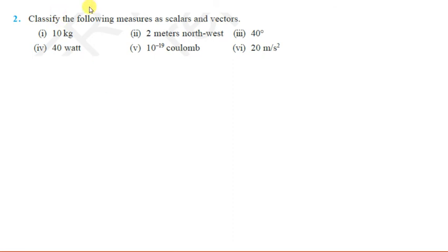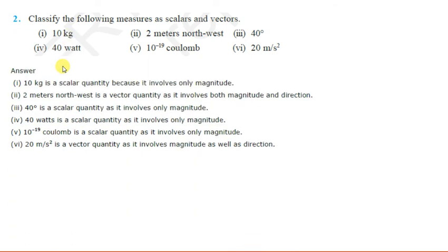Next, classify the following as scalars and vectors. In case 2, magnitude ke saath saath direction bhi diya hai, so it is a vector quantity. In case 3, kewal magnitude hai — angle — so it is also a scalar. In case 4, it is a scalar quantity because only magnitude is involved; yeh charge ka unit hai. Case 5: 20 metres per second — yeh acceleration ki unit hai, aur acceleration vector quantity hai kyunki ismein magnitude aur direction dono involved hote hain.